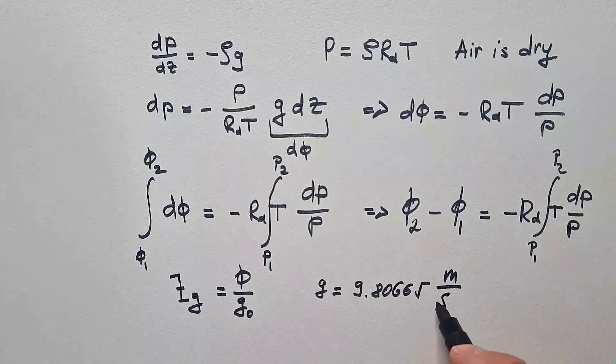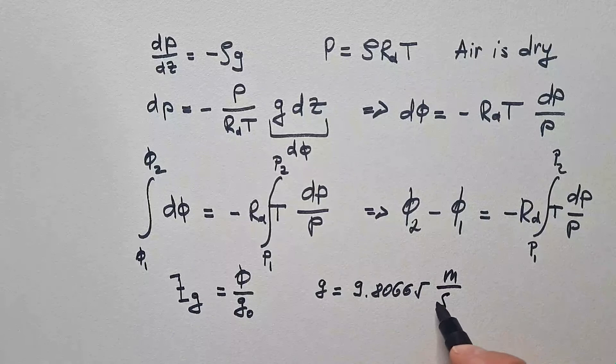So, that means if we divide this equation with g0, I will have this equation expressed in terms of geopotential height.